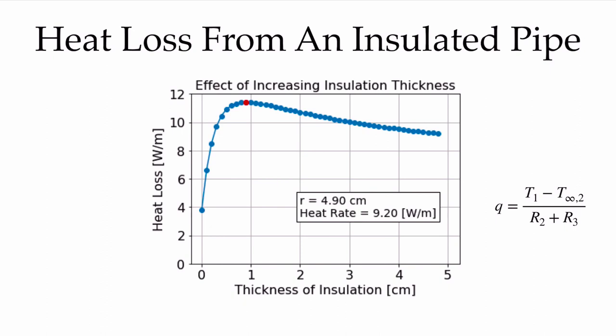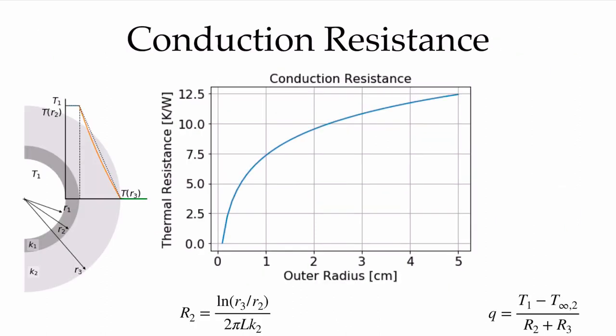Let's explore what's going on. The conduction resistance increases as we increase the thickness of the insulation — it's given by the log formula, and as R3 gets bigger, this resistance value gets larger and larger as we'd expect. With a larger resistance, we would expect a smaller heat loss through the pipe — that's why we add insulation.